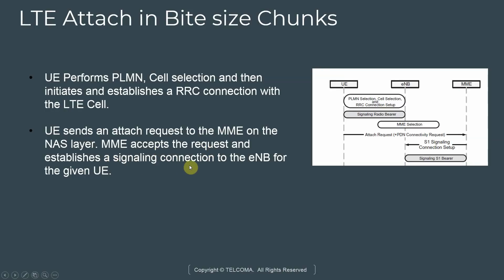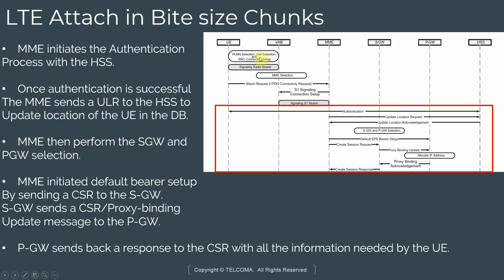The MME accepts the request and establishes a signaling connection to the eNodeB for that subscriber. The MME then initiates the authentication process with the HSS. Once authentication is successful, the MME sends an Update Location Request to the HSS over the Diameter protocol, and receives an acknowledgement back. The MME then performs S-GW selection based on the Tracking Area Code, and P-GW selection based on the APN sent in the PDN Connectivity Request.